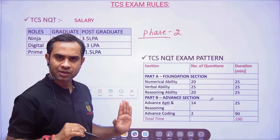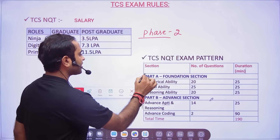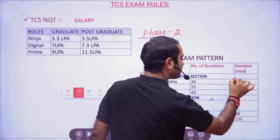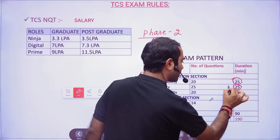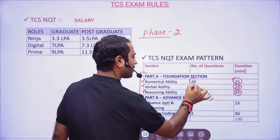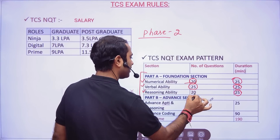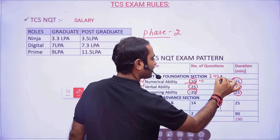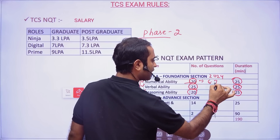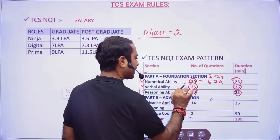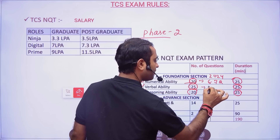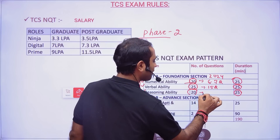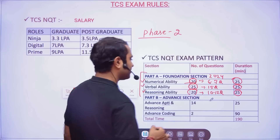You must be aware about the pattern. In the foundation section we have numerical ability, verbal ability, and reasoning ability. For all three sections you will get 25 minutes each. Numerical ability has 20 questions, verbal ability 25 questions, reasoning 20 questions. In the 2024 examination, students were able to solve hardly 6 to 7 questions in numerical ability. The verbal ability cutoff will be a little high — around 15 questions you need to solve. For reasoning ability you need to solve around 10 to 12 questions.